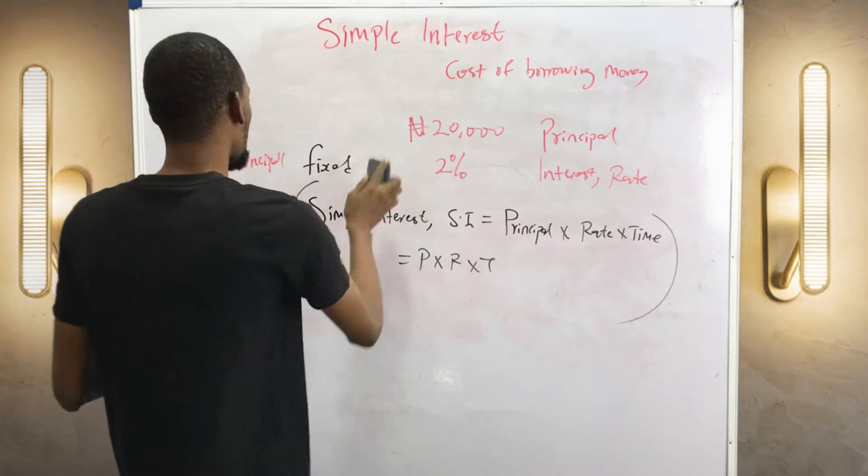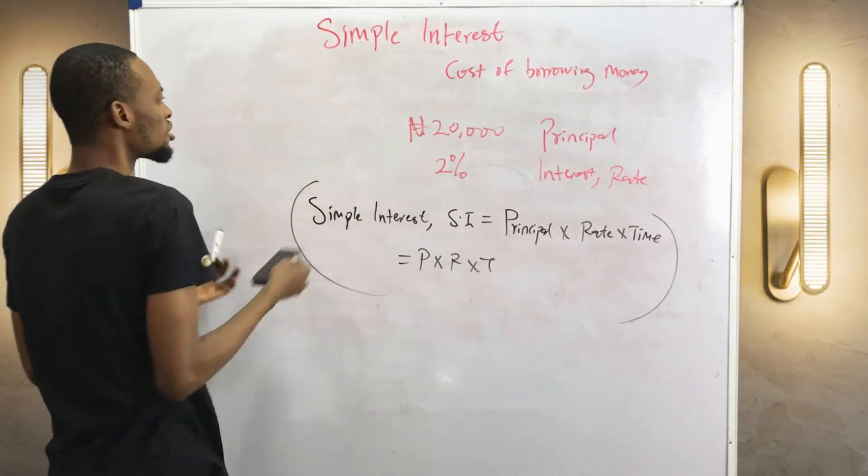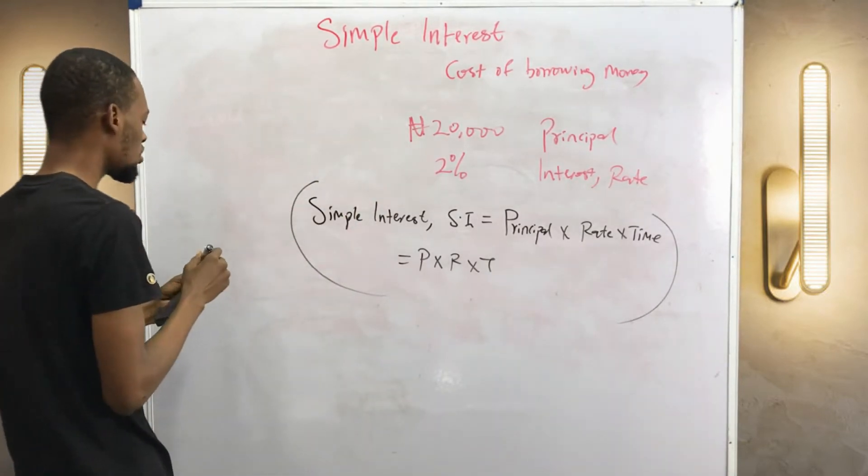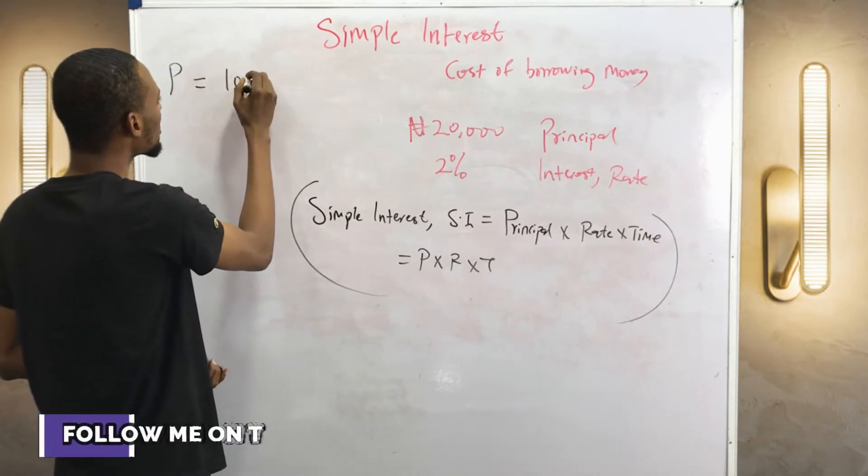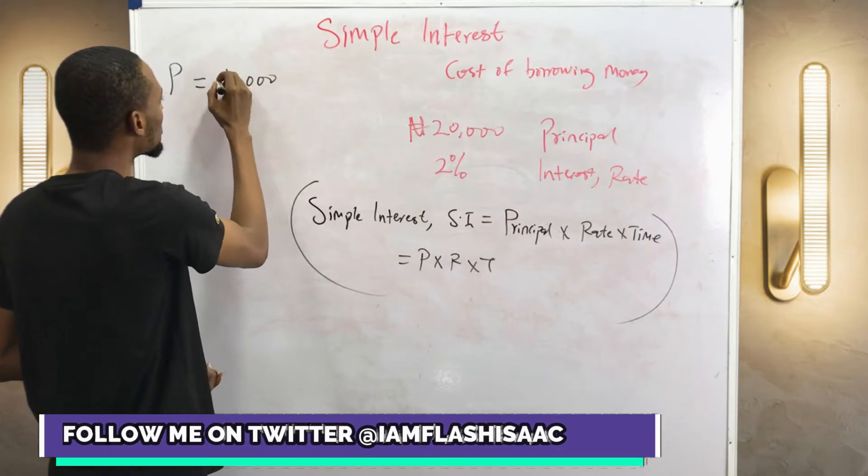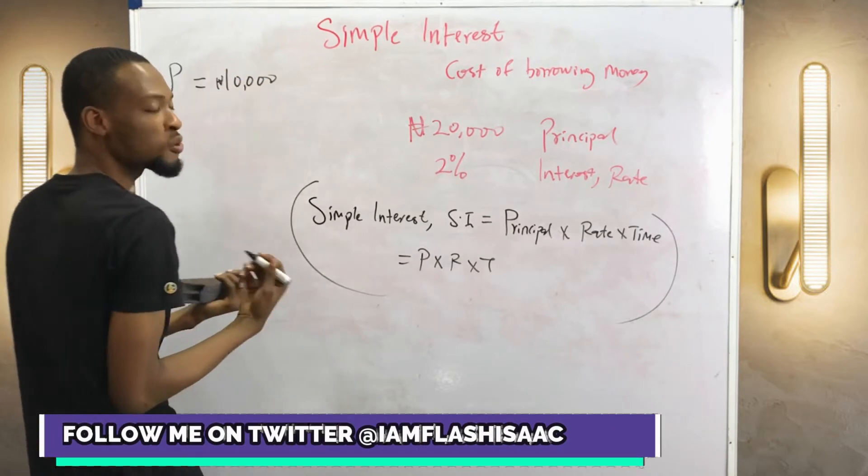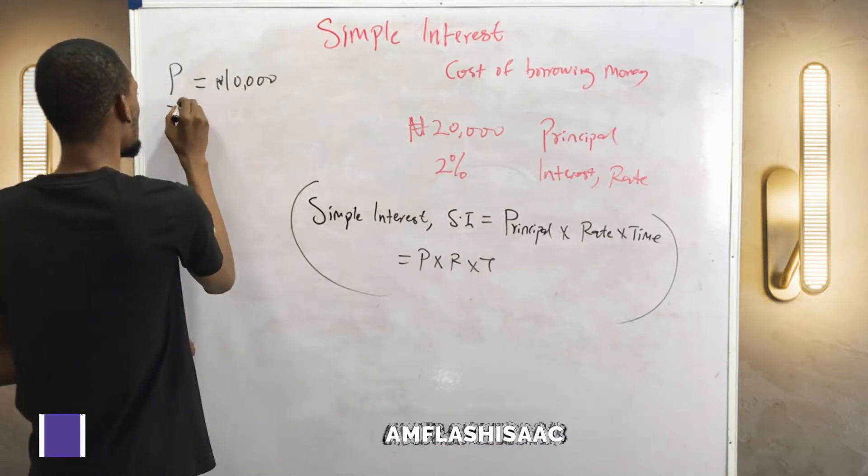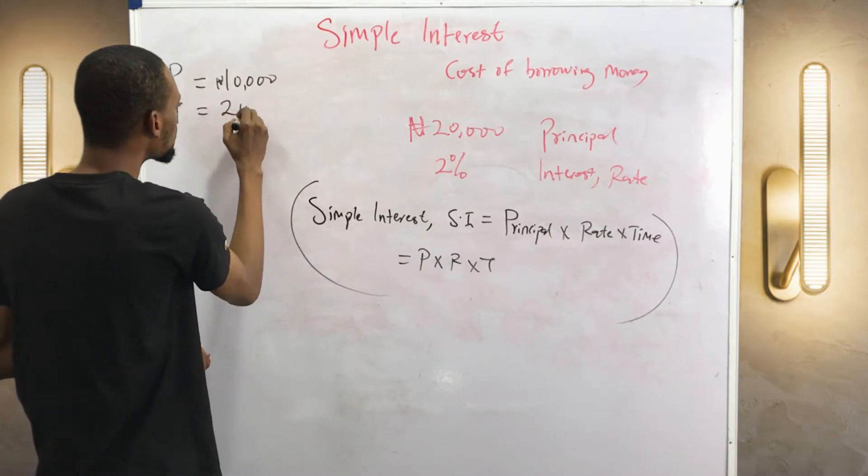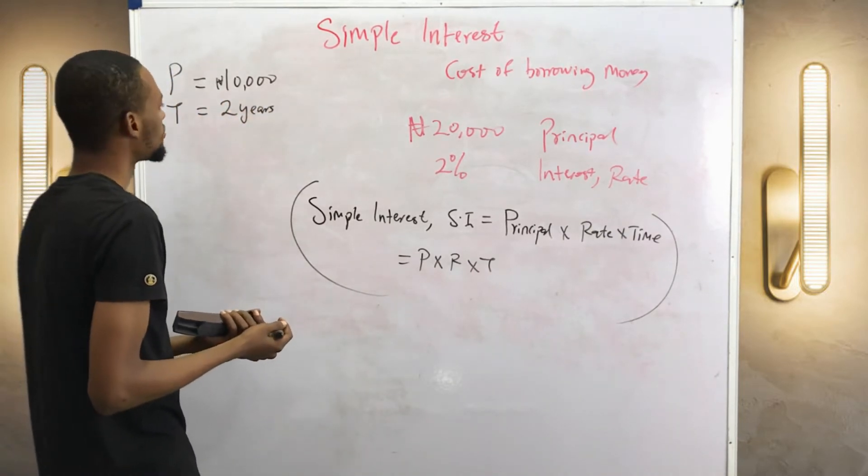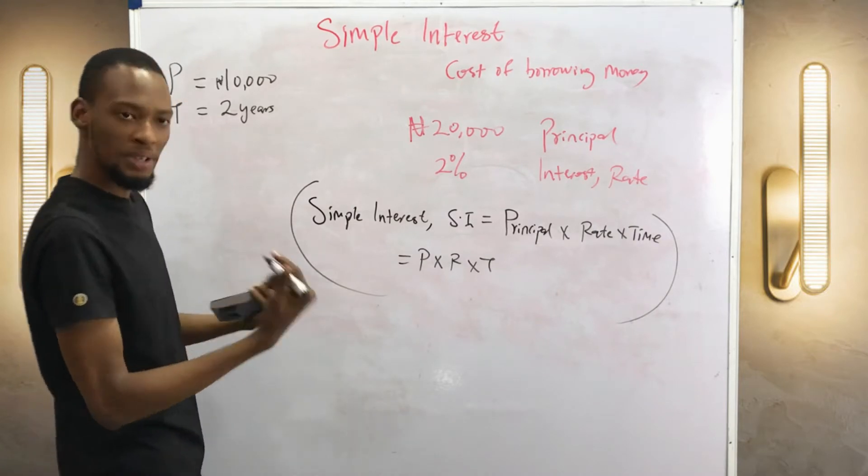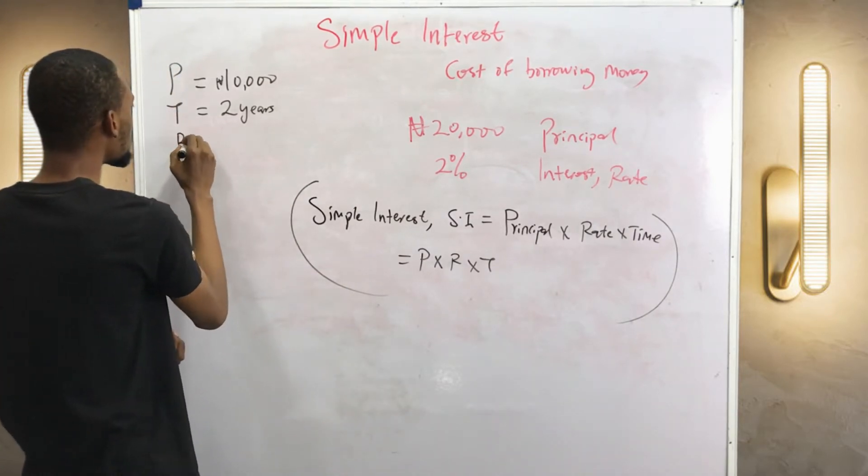Now take an example. Let's say John borrows 10,000 naira, that would be the P. So P equals 10,000 naira for two years. Time equals two years at the rate of, let's say 10 percent per annum. That'll be your rate, 10 percent.